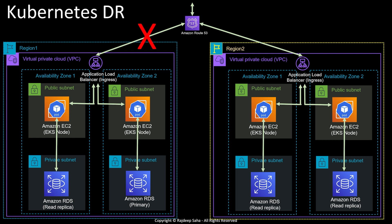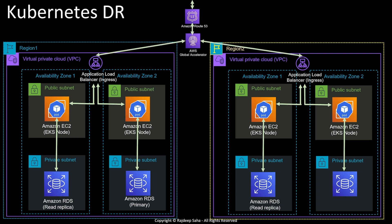You can also split traffic between the two regions, but that complicates things, and generally in real-world enterprises you will fail over only when one region is down. Route 53 is great, but if the client caches the DNS result there will be a delay to switch over to region two. To avoid that, use a newer AWS service called AWS Global Accelerator — a networking service that sends your users' traffic through AWS's global network infrastructure, improving internet performance by up to 60%. Global Accelerator can switch traffic routes without requiring DNS changes or delays caused by DNS propagation and client-side caching.